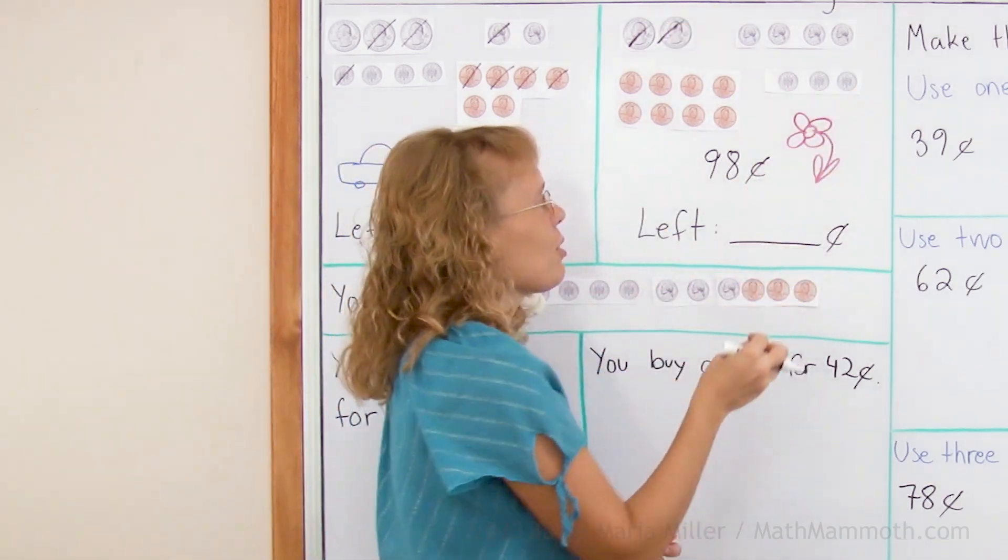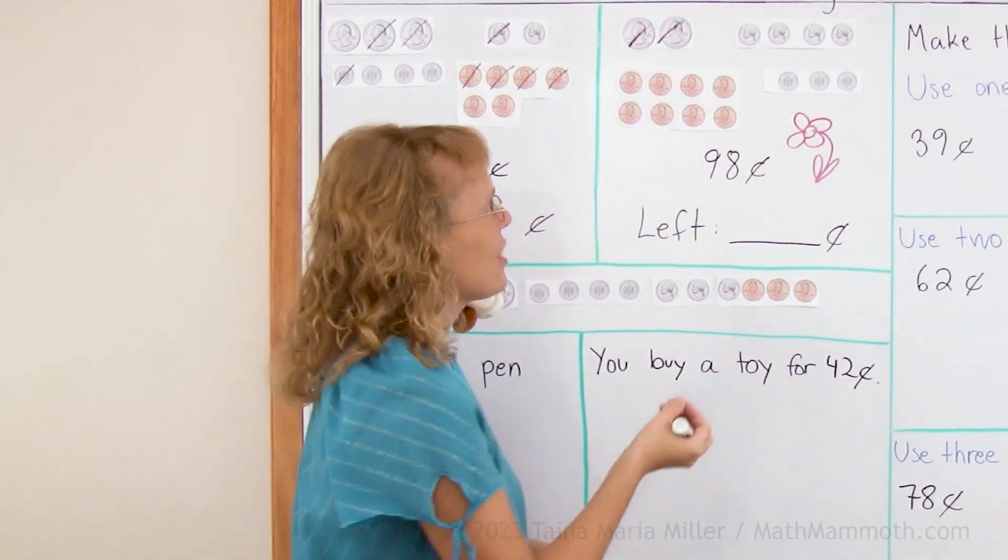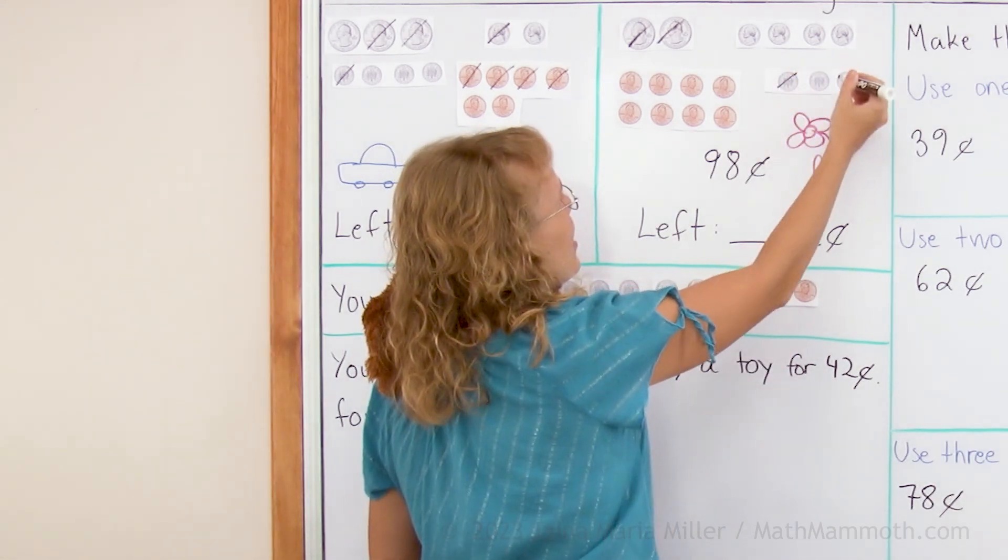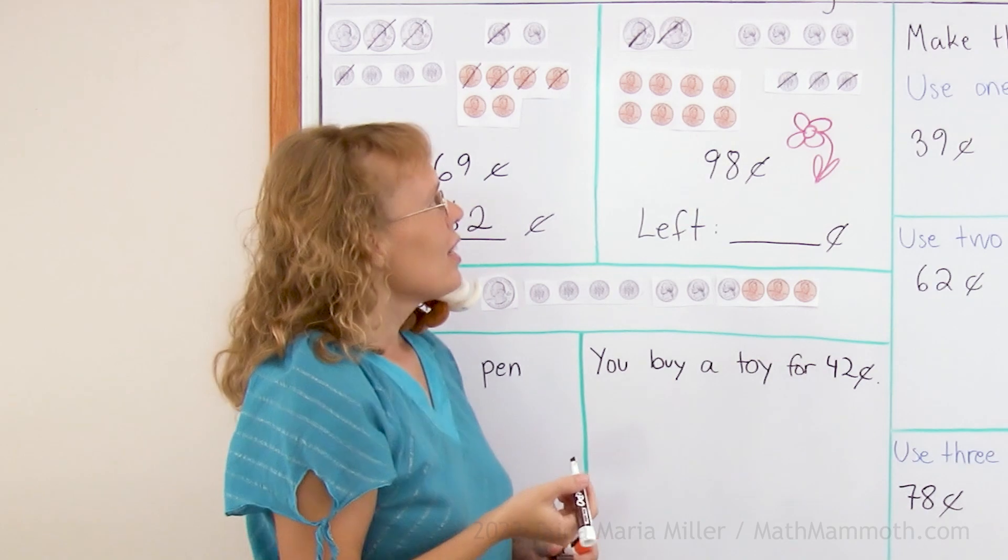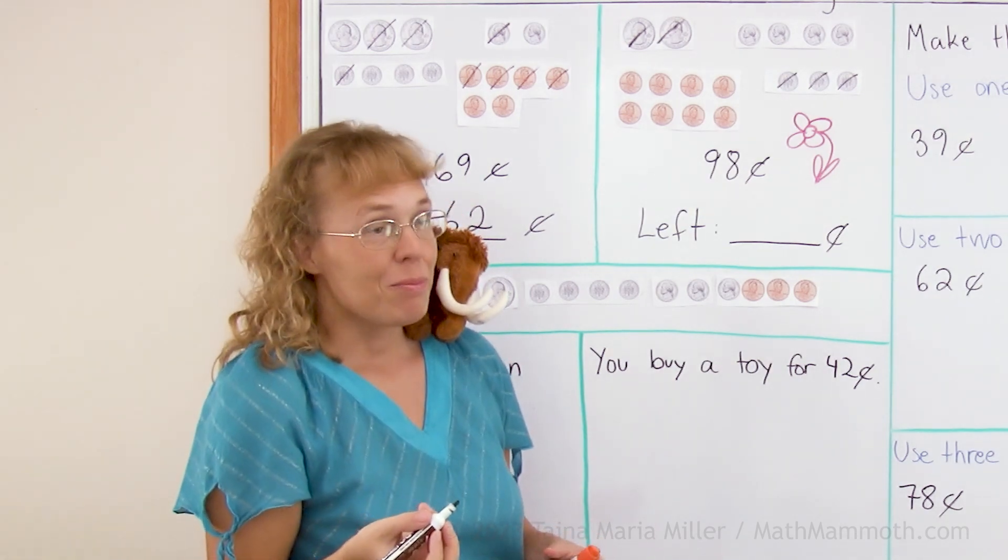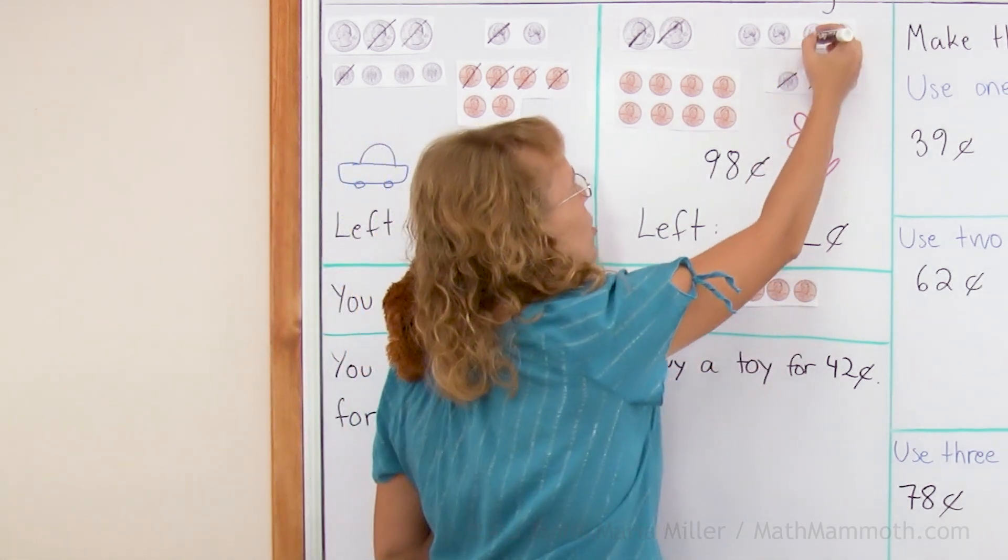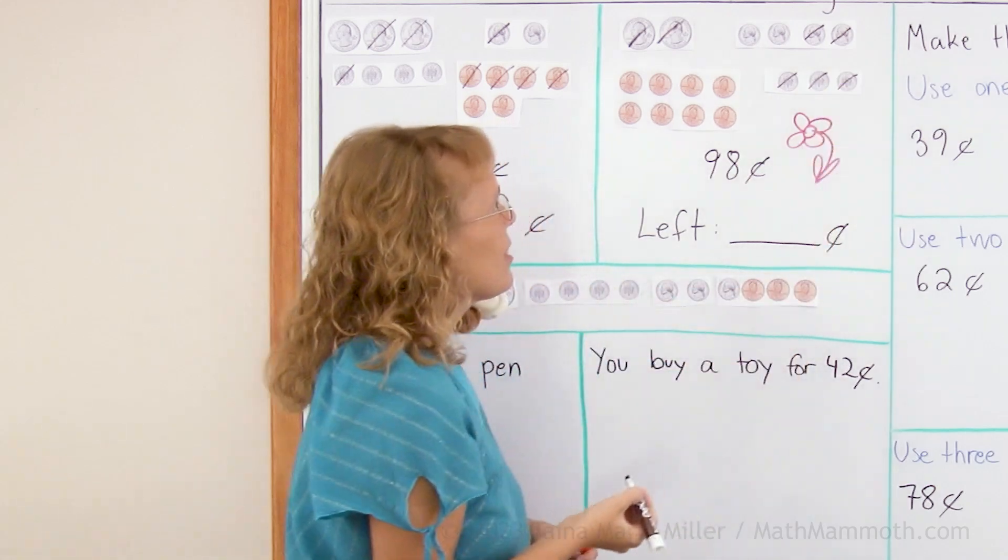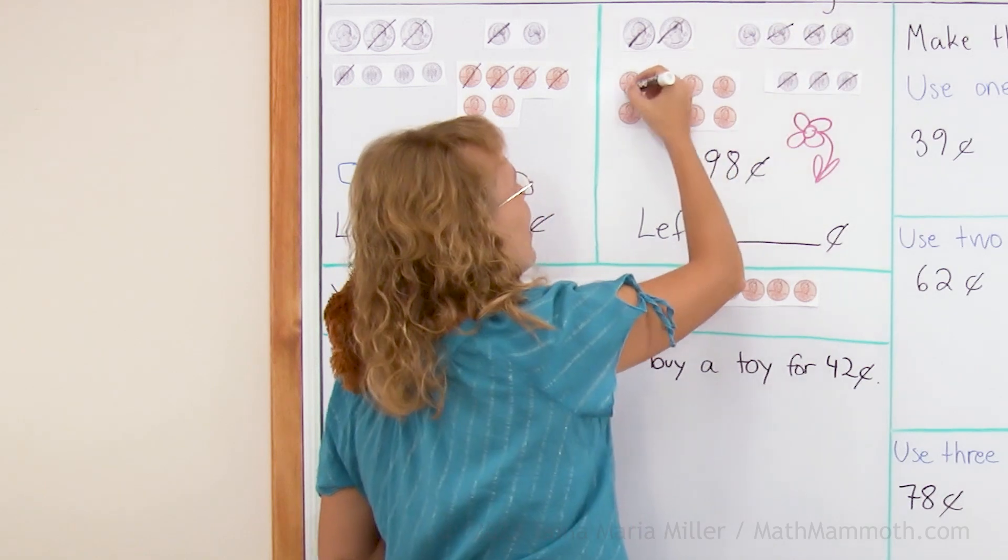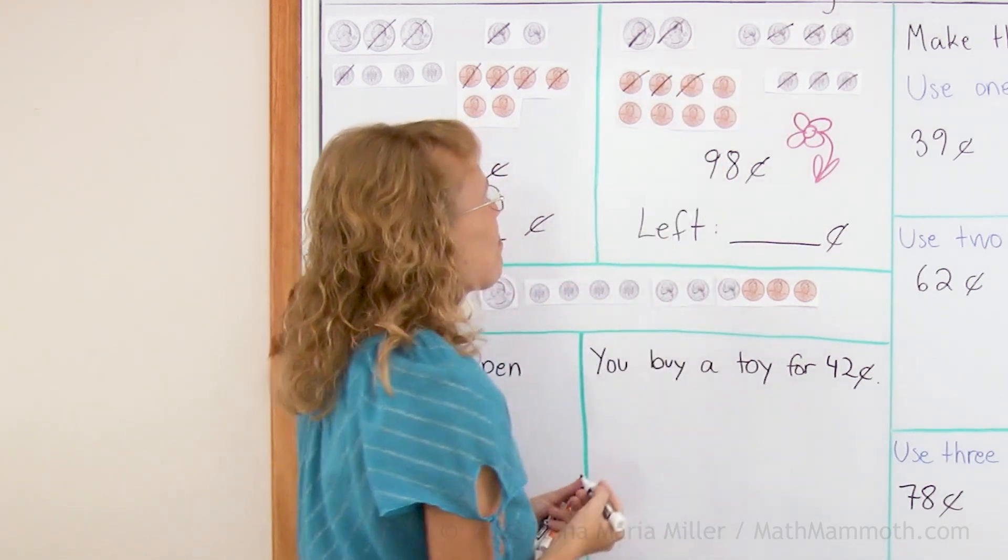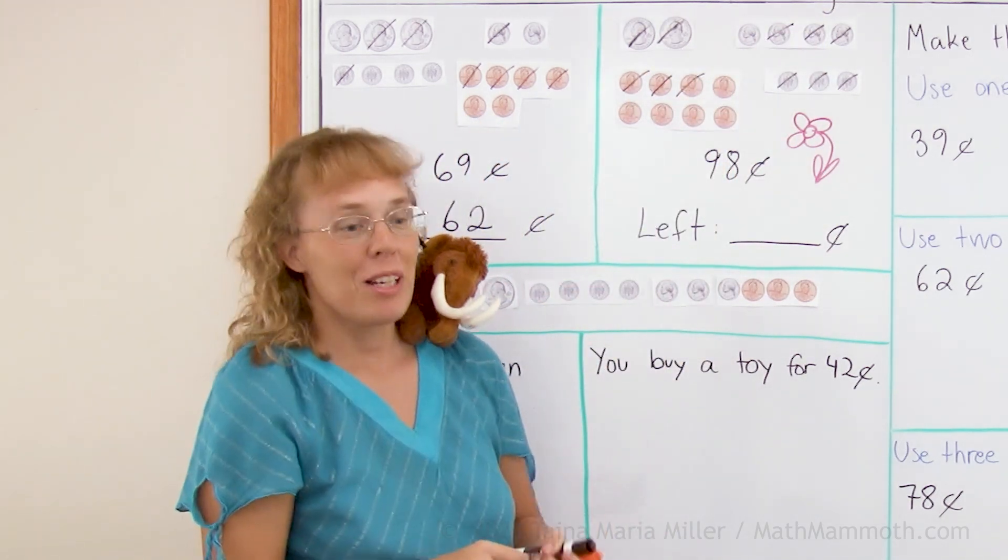And then let's take those 10s, dimes are 10 each. So 60, and then 70, and then we need 10 more because it's 90. So two of these nickels makes 10, that would be 90. And then 8 cents, so 5 and 3.